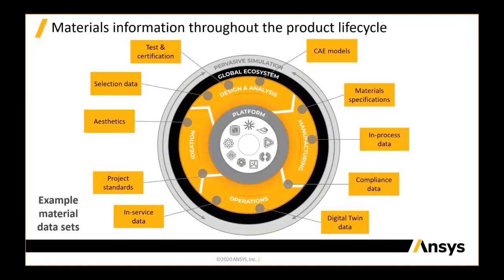This diagram shows the kind of design lifecycle, and you can see that various types of materials information are needed across this entire lifecycle. For example, at the ideation stage, it may be the aesthetic properties of materials which are key — how do they feel, how do they look, what kind of quality do they bring across? You then get to the design and analysis phase where you need hard data for materials selection and product simulations. All these stages generate a lot of materials data which needs to be made available to a large number of user groups across businesses.